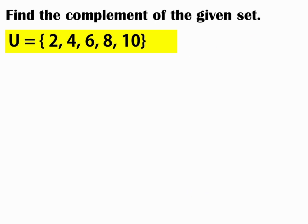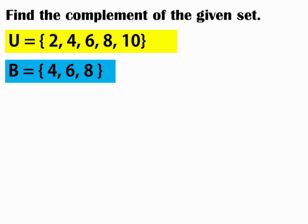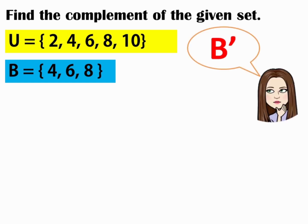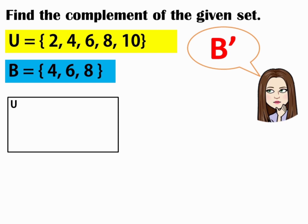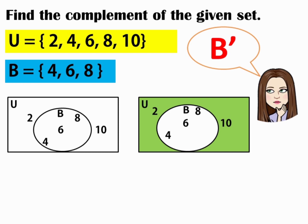Example number 2: if U is equal to 2, 4, 6, 8, 10 and B is equal to 4, 6, 8, now we are going to find the B complement. Make a rectangle for the universal set and write the elements — 2, 4, 6, 8, 10. The elements of set B are 4, 6, 8. The circle represents set B. The shaded region will be your final answer or the B complement. So, B complement is equal to 2 and 10.